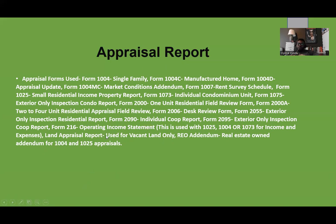There are also land appraisal reports — no specific form number — used for vacant land only. There's also an REO addendum, which stands for real estate owned addendum, used with a 1004 or 1025 when buying a bank real estate owned property or an investor property. For those doing strictly residential front-end underwriting, you'll most commonly use the 1004, 1004C, 1004D, 1073, and 1075 forms.